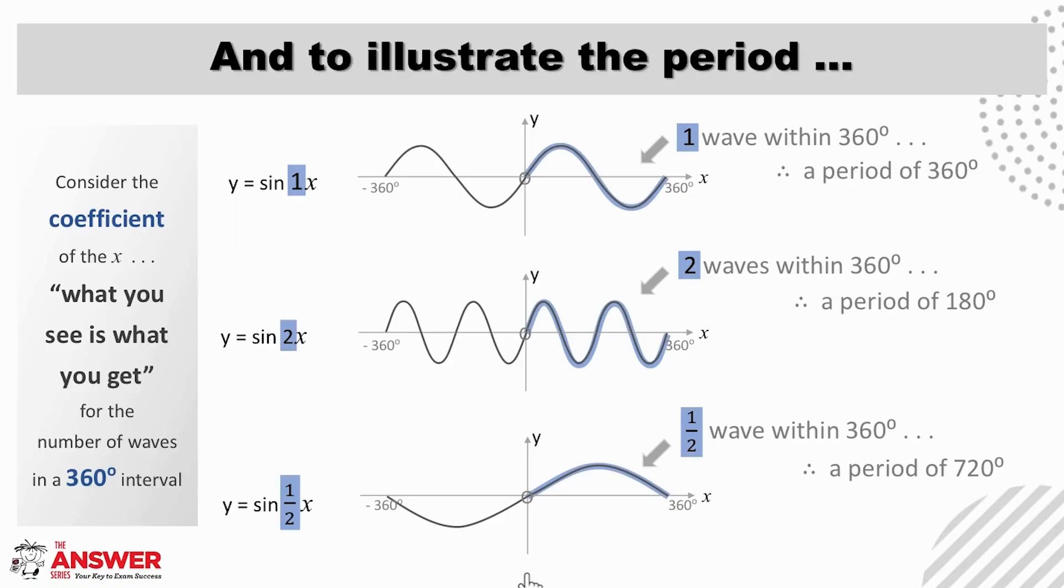Let's have a look now at how these changes impact the standard sine graph. So here we have sketched each of the three graphs we just mentioned, and over here for each we have highlighted the number of waves within a 360 degree interval. The standard graph, as we said, has one wave within this interval. Then if we look at the graph of y equals sine 2x, this has two waves in this interval, and the graph of y equals sine a half x has a half a wave. It is maybe fun to remember this as what you see is what you get when considering the coefficient of the x, but it is always a good idea to ground your knowledge in solid understanding.